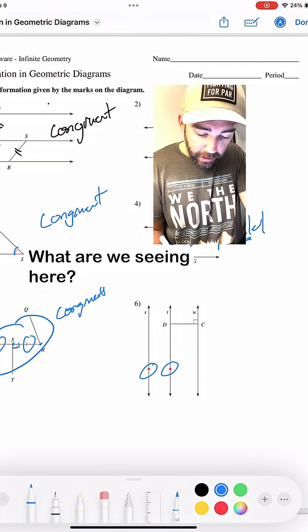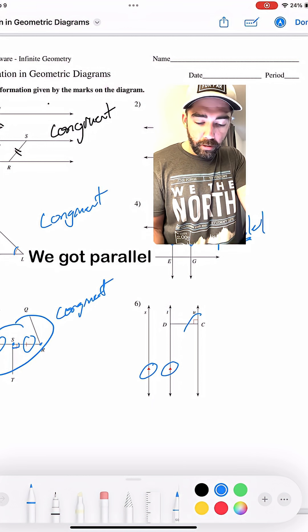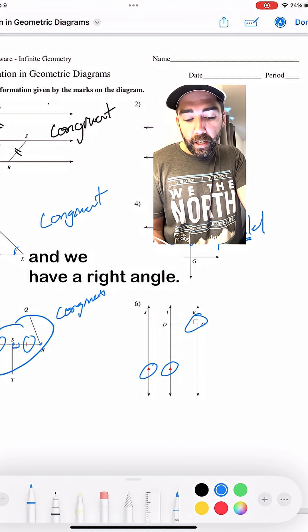Here we go. Number six. What do we see in here? We got parallel, and we have a right angle.